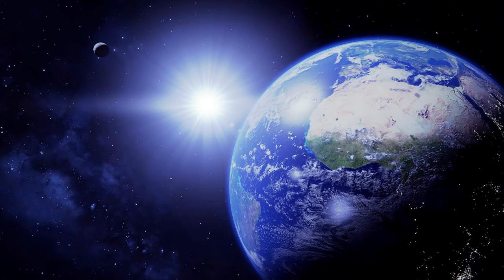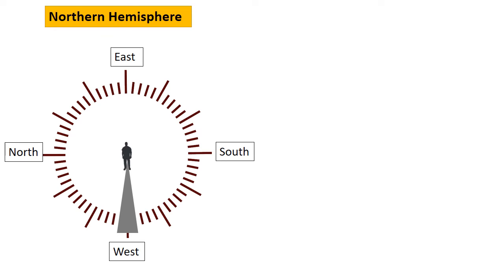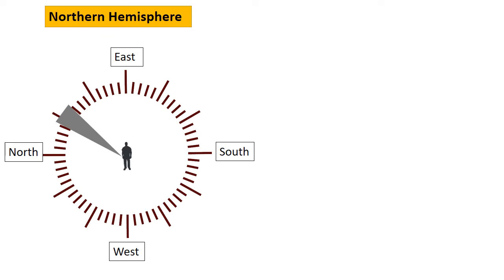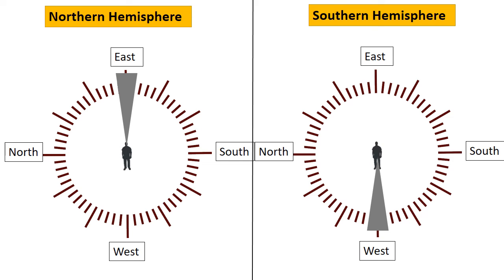Next, if we talk about shadow movement — the sun rises in the east and sets in the west in both the Northern and Southern Hemisphere. But when it comes to shadow movement, there are differences. In the Northern Hemisphere, shadows move clockwise, but in the Southern Hemisphere, shadows move anti-clockwise.